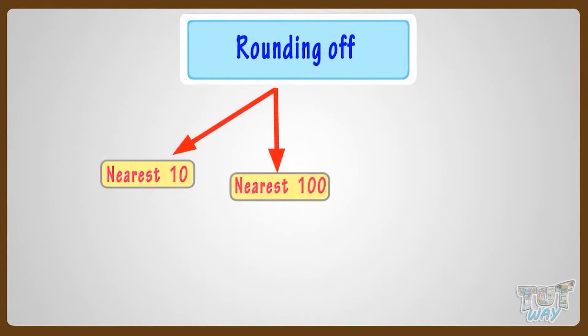Rounding can be to the nearest 10, nearest 100, or nearest 1000. So let's first learn rounding to the nearest 10.